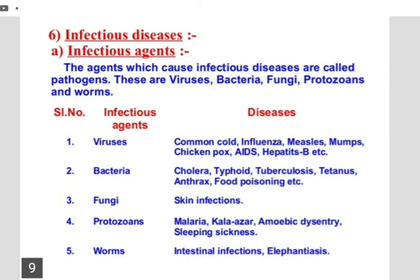Antibiotics are drugs that commonly block biochemical pathways in bacteria. Many bacteria make a cell wall around themselves for protection. Penicillin is an antibiotic that blocks the biochemical pathway by which bacteria build a cell wall around them. When that wall is destroyed, the bacteria have no protection and cannot develop any other mechanism to protect themselves — as a result, the bacteria die.